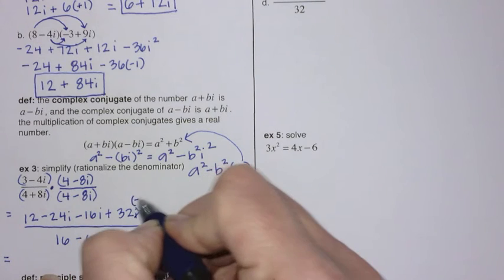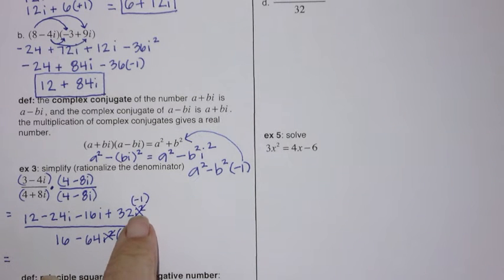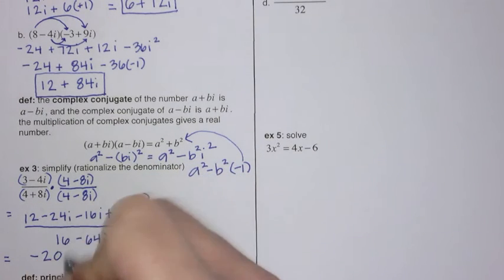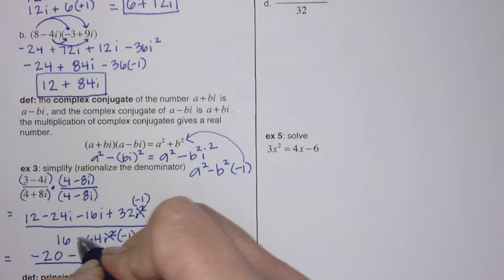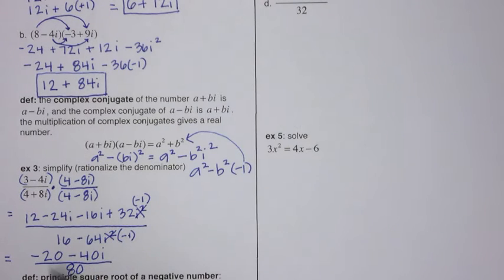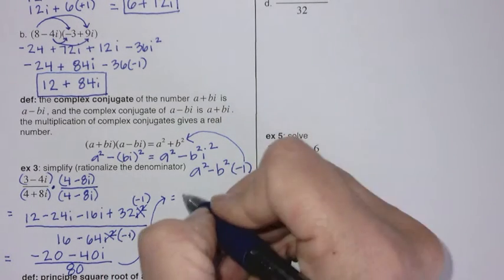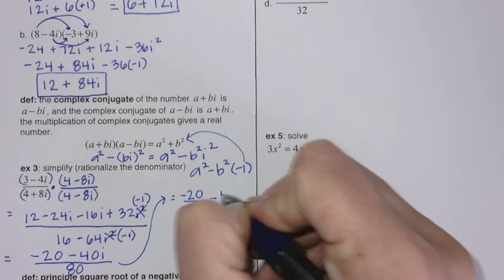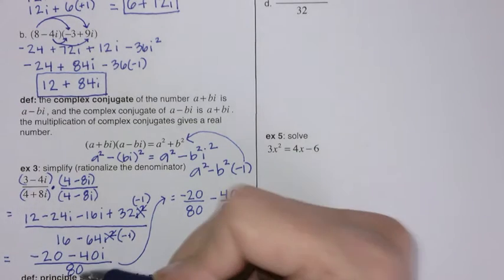Since i squared is negative 1, I'll substitute that in. In the numerator: 12 and negative 32 gives negative 20, and negative 24i minus 16i gives negative 40i. In the denominator, the two negatives make a positive, so 64 plus 16 gives 80. This is not fully simplified — we can reduce. One way is to split it into two fractions over the common denominator of 80.